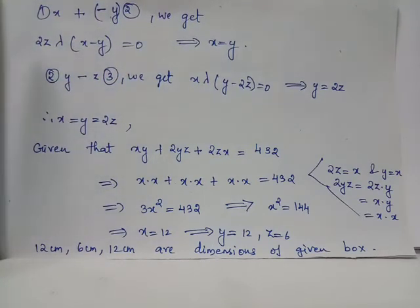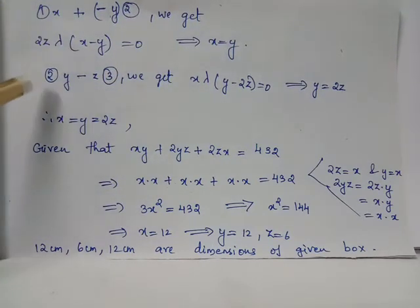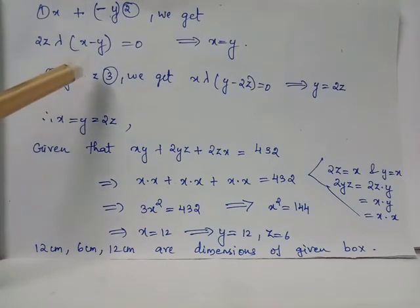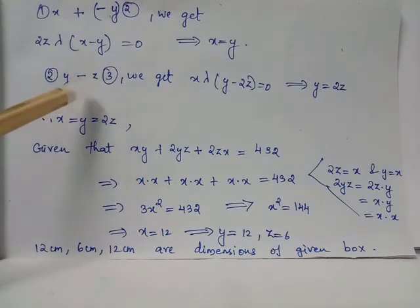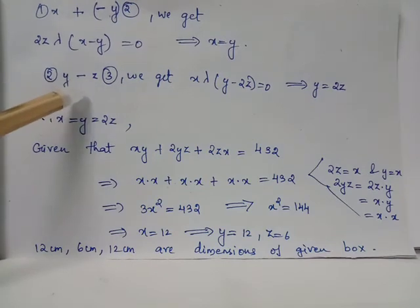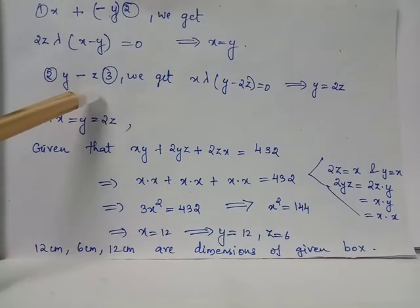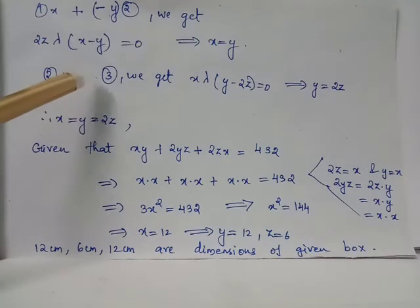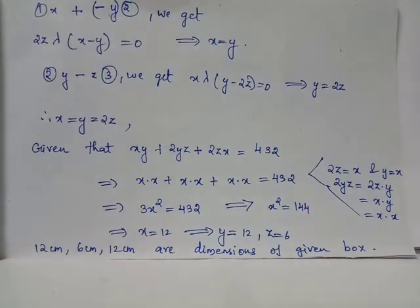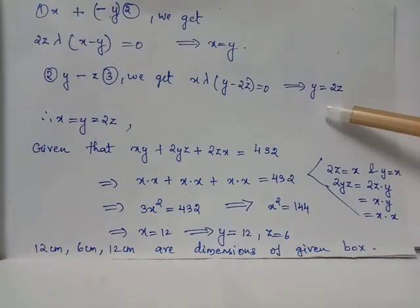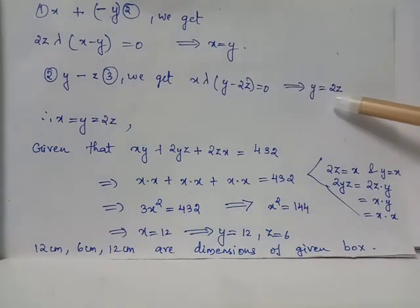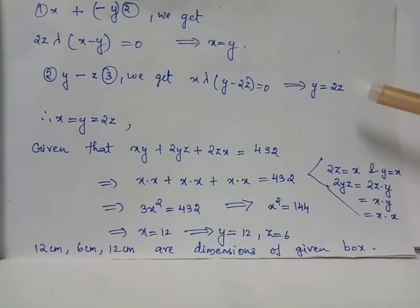Also we evaluate the expression: equation 2 multiplied by y and equation 3 multiplied by z. We take the relation equation 2 into y minus equation 3 into z. After evaluating this we get the relation y is equal to 2z after simplification. So looking at these two relations we have the conclusion x equal to y equal to 2 times z.